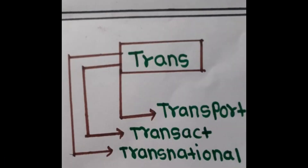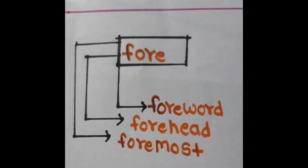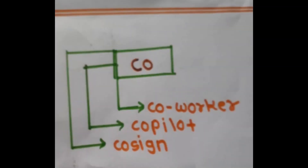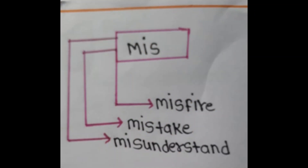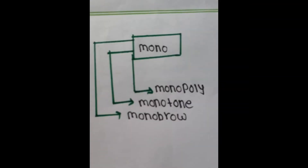I use 'trans' as a prefix: transport, transact, transnational. I use 'fore' as a prefix: forward, forehead, foremost. I use 'co' as a prefix: co-worker, co-pilot, co-side. I use 'miss' as a prefix: misfire, mistake, misunderstand. I use 'mono' as a prefix: monopoly, monotone.